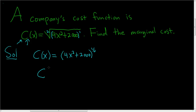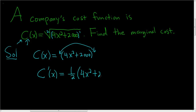Now we can take the derivative. c prime of x is equal to — we bring the 1 half down, so 1 half times 4x squared plus 2,000, then we subtract 1, giving negative 1 half, times the derivative of the inside. The derivative of 4x squared is 8x, and the derivative of 2,000 is 0, so we won't write it.